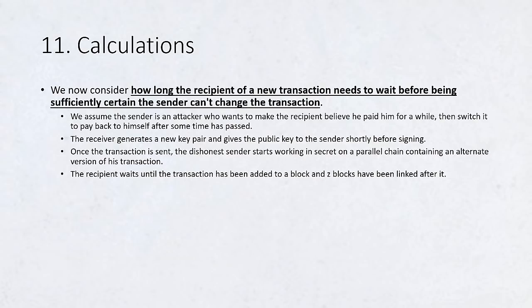We now consider how long the recipient of a new transaction needs to wait before being sufficiently certain the sender can't change the transaction. We assume the sender is an attacker who wants to make the recipient believe he paid him for a while, then switch it to pay back to himself after some time has passed. The receiver will be alerted when that happens, but the sender hopes it will be too late. The receiver generates a new key pair and gives the public key to the sender shortly before signing. This prevents the sender from preparing a chain of blocks ahead of time. Once the transaction is sent, the dishonest sender starts working in secret on a parallel chain containing an alternate version of his transaction.